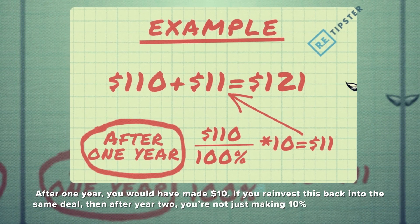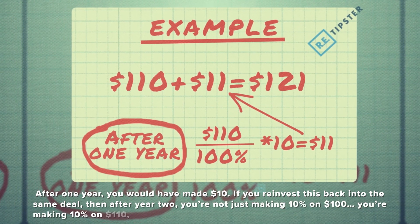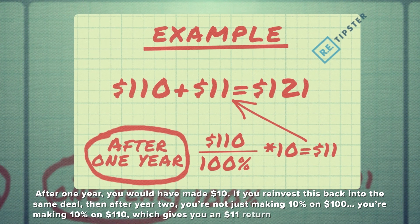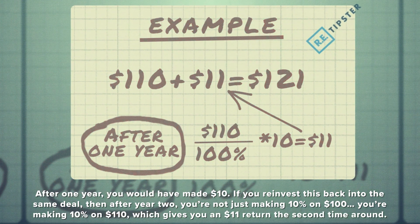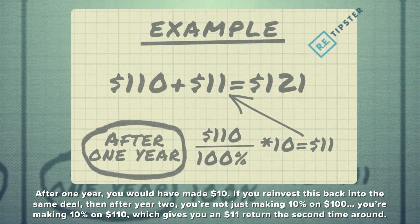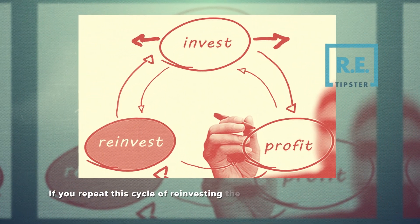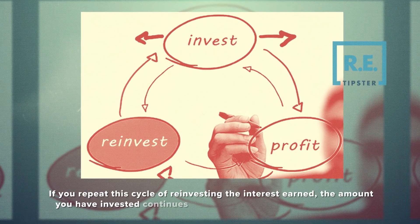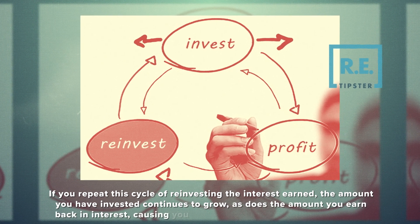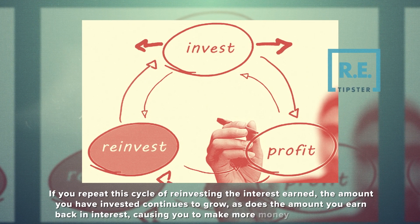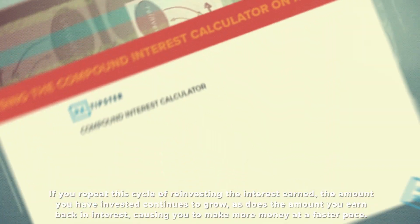then after year two, you're not just making 10% on $100 — you're making 10% on $110, which gives you an $11 return the second time around. If you repeat this cycle of reinvesting the interest earned, the amount you have invested continues to grow, as does the amount you earn back in interest, causing you to make more money at a faster pace.